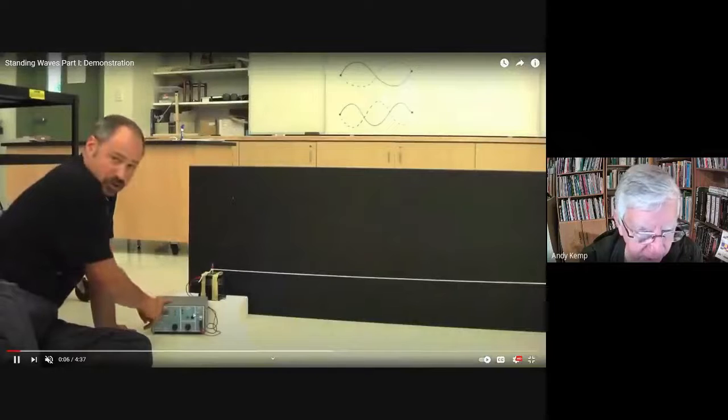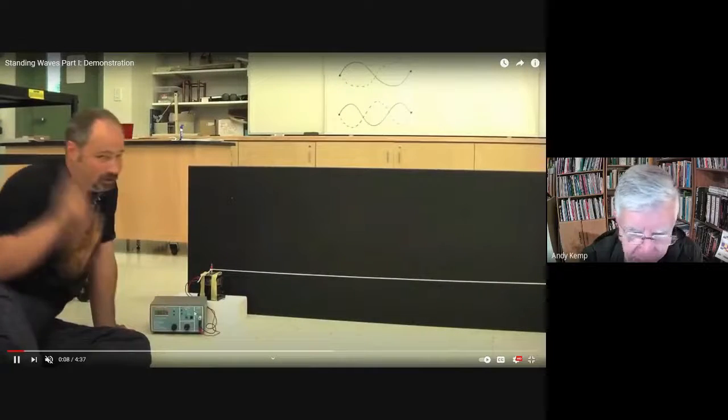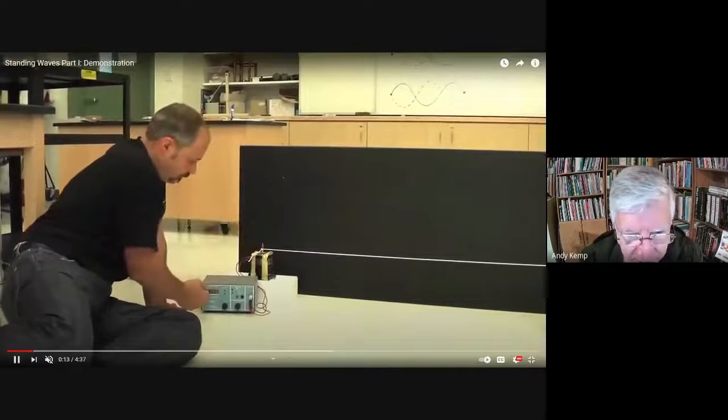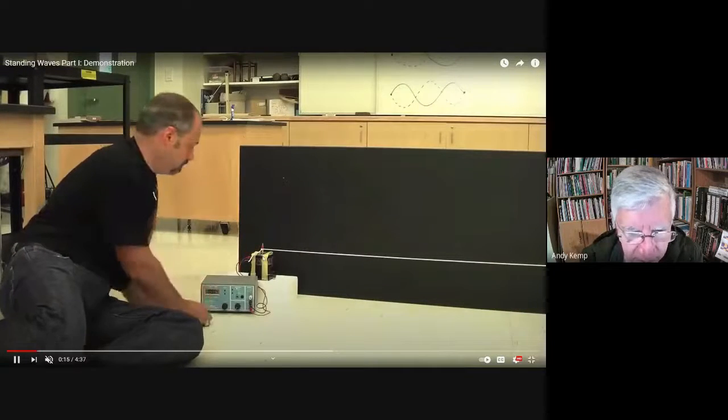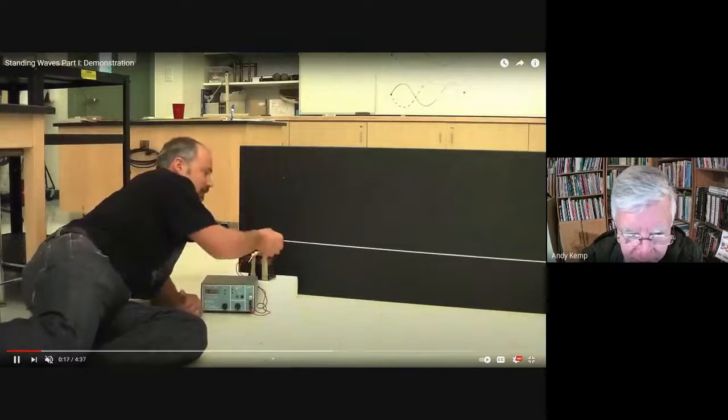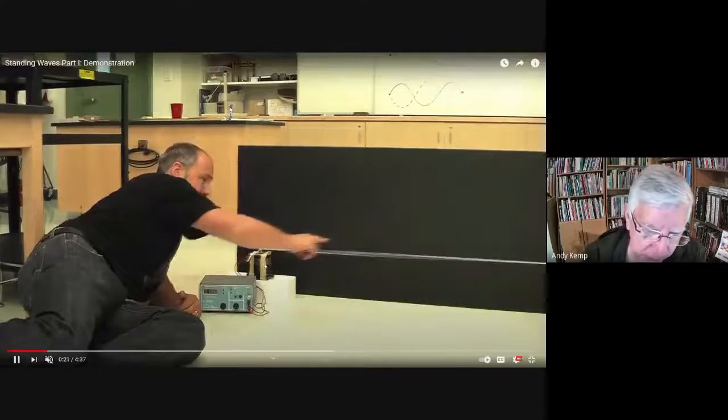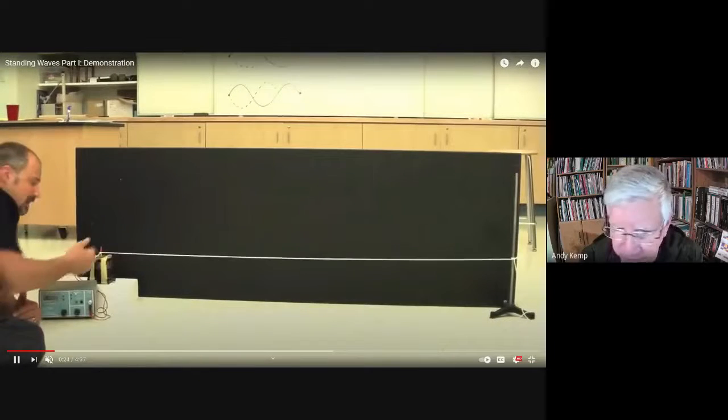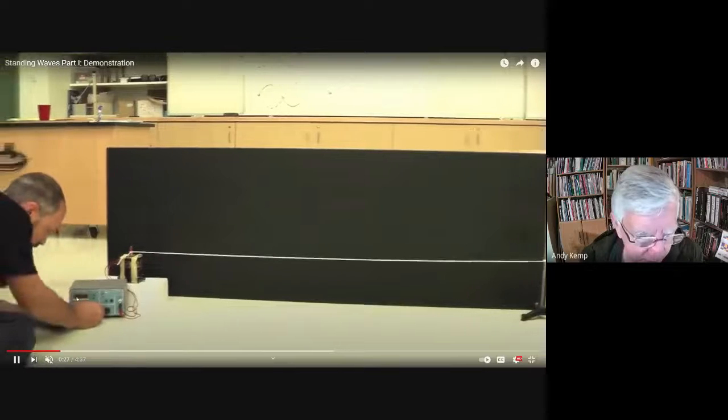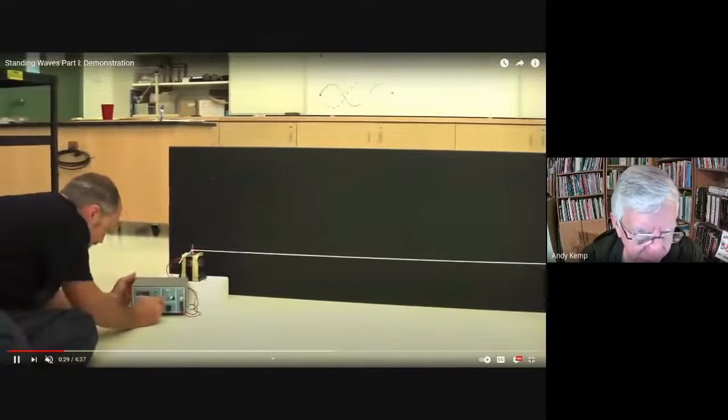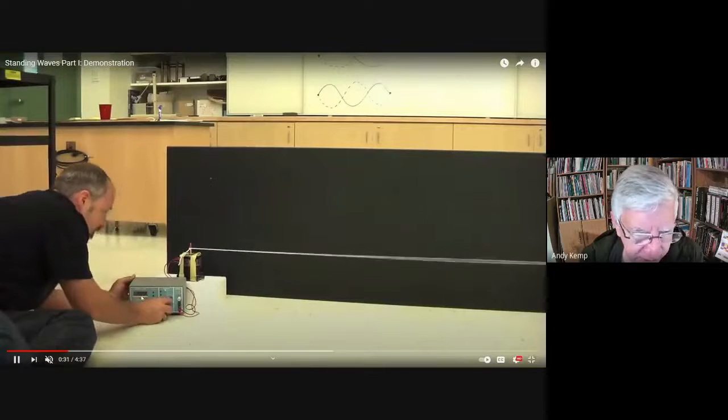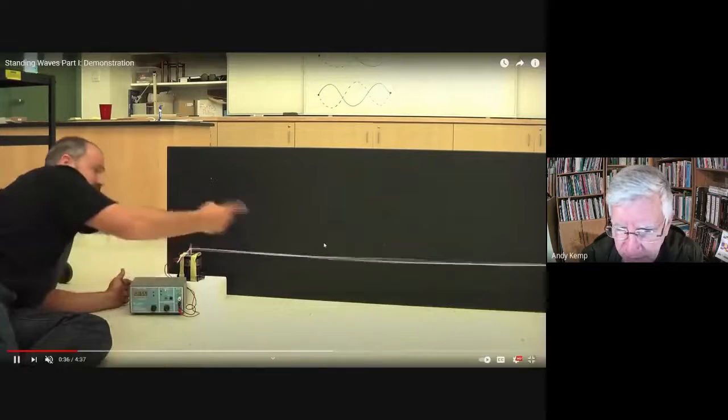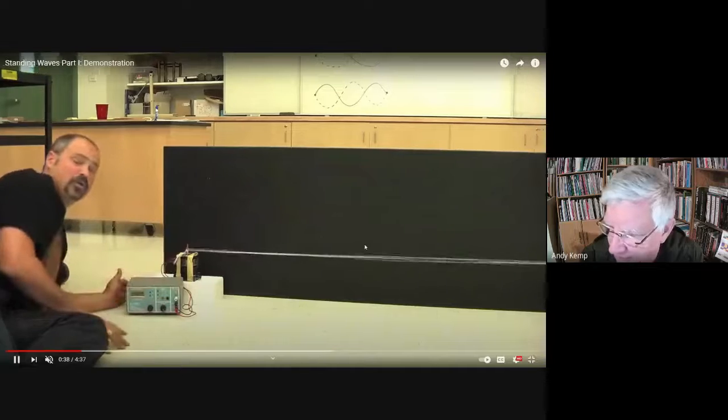Basically what we have here, this is a frequency generator, this box in the very front, and then there's a rope tied to a way to shake it up and down just a little. It's actually a speaker, so you can control the exact vibrational frequency. Let's turn on the frequency generator and pretend like he's shaking it at some random vibrational frequency of, let's say, 17.